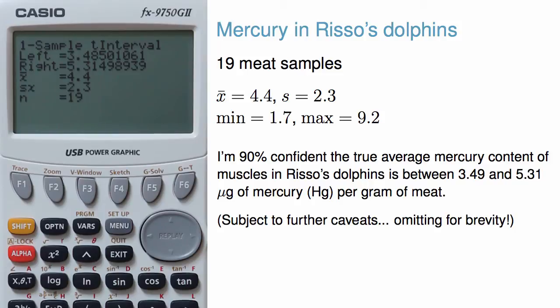Based on these results, I'm 90% confident that the true average mercury content of muscles in Risso's dolphins is between 3.49 and 5.31 micrograms of mercury per gram of meat. Note that this is above the Japanese regulation level of 0.4.